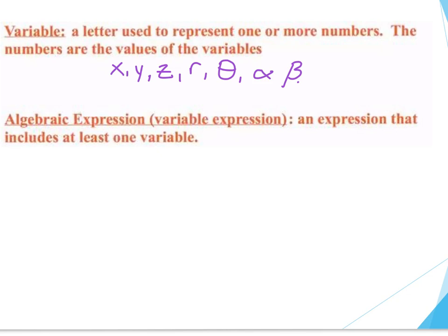For example: something plus two gives me four — well, that 'something' we're just mathematically writing down as x. We're using a letter to represent something we don't know, and our goal as we go through this chapter is to solve for whatever that variable represents. So a variable is a letter that will represent some sort of number. Next definition: algebraic expression. An expression is something that includes at least one variable.